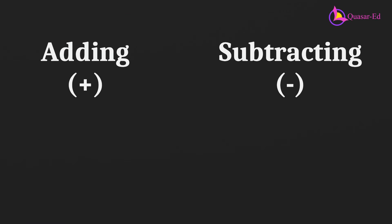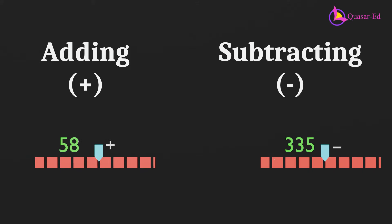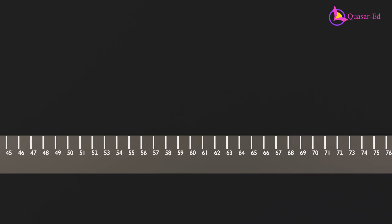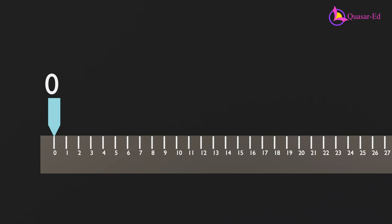Adding or subtracting in its simplest form is essentially counting. Imagine an infinitely long ruler with a pointer. To add 5, you move the pointer to 5. To add 6, you count 6 steps from the current position and move the pointer accordingly. To subtract 4, you count back 4 steps and move the pointer.